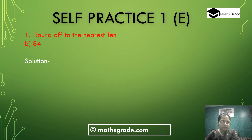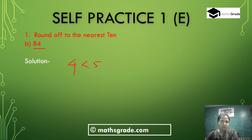Part B: round 84 to the nearest 10. The unit place digit is 4, which is less than 5, so do not add 1 to the 10th place digit. Just write the 10th place digit as it is, that is 8, and write 0 in the unit place. So 84 rounded to the nearest 10 is 80.